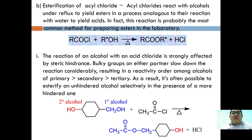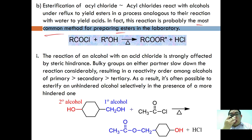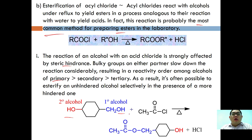Acyl chloride reacts with alcohols under reflux to yield esters in a process analogous to its reaction with water. This is a common and preferred laboratory method to prepare esters. The reaction of an alcohol with acyl chloride is strongly affected by steric hindrance — bulky groups slow the reaction considerably. The reactivity order among alcohols is: primary (most reactive), secondary, and tertiary (least reactive), so it is often possible to esterify an unhindered alcohol selectively in the presence of a more hindered one.